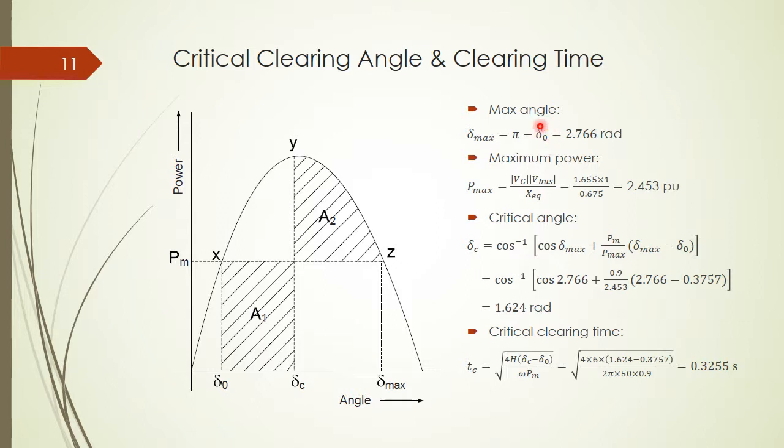After finding the initial condition delta_0, we can find out delta_max, which is pi minus delta_0. And then the maximum power will be given as P_max equals V_g amplitude times V_bus amplitude over X_equivalent, which is here. The critical clearing angle delta_c will be given by comparing the area A1 and A2 here. We have the formula to do that. The formula says that it is cosine inverse of (cosine delta_max plus P_m over P_max times (delta_max minus delta_0)). Replacing the numbers here, we have 1.624 radians.